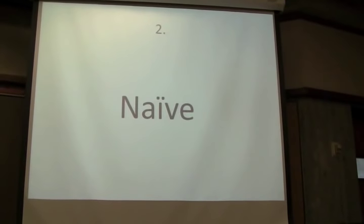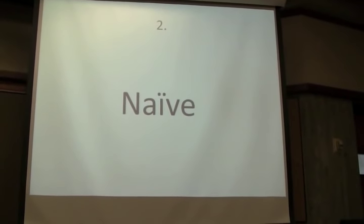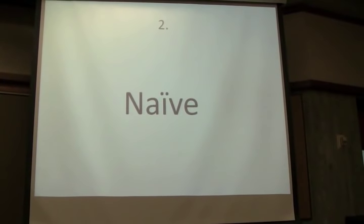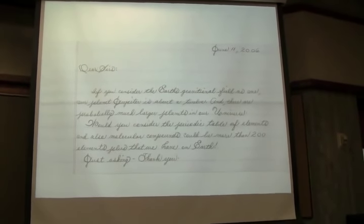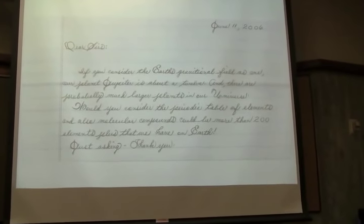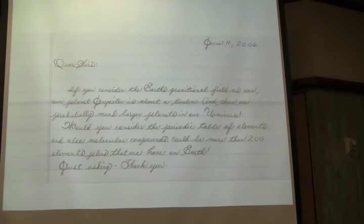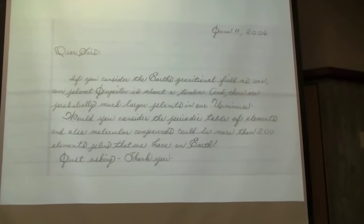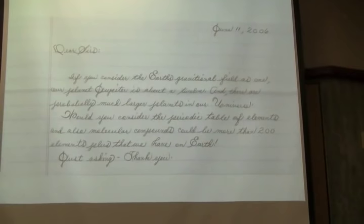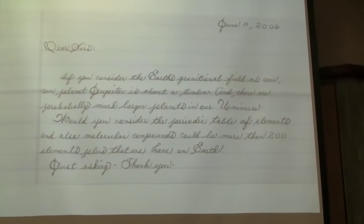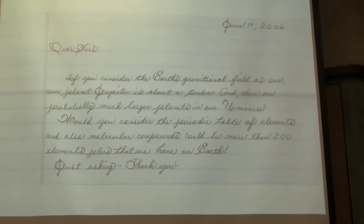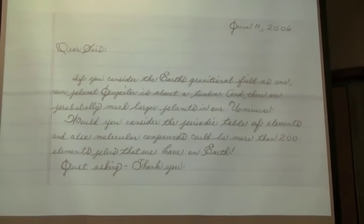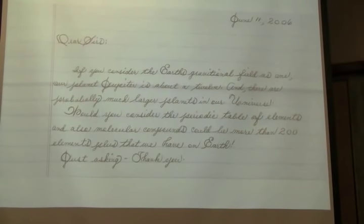Okay. So enough from the crazy. The naive - people who have generally not had any science education or have not had any science education in a long time. For example, this letter was sent to us from a retirement community in Texas. If you consider the Earth's gravitational field as one, our planet Jupiter is about a twelve. And there are probably more, much larger planets in our universe. Would you consider the periodic table of elements and also molecular compounds? Could it be more than 200 elements plus that we have on Earth? Just asking. Thank you. Love it, seconded.